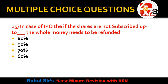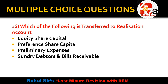Question 14 — in case of an IPO (Initial Public Offering), if the shares are not subscribed up to a certain percentage, the whole money needs to be refunded. From the chapter on underwriting of shares and debentures: when an IPO happens, 90% of the money must be subscribed. If not, the entire amount must be refunded. That is why companies take the help of underwriters, who ensure 90% subscription. Remember: 90%.